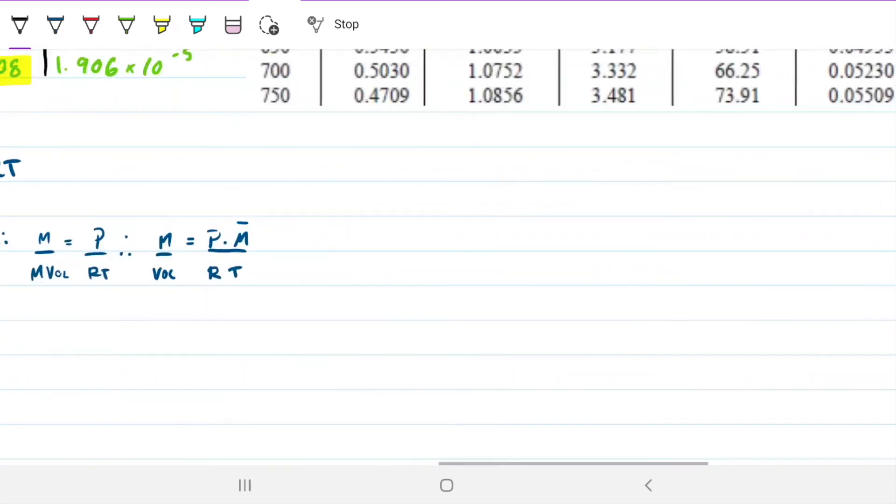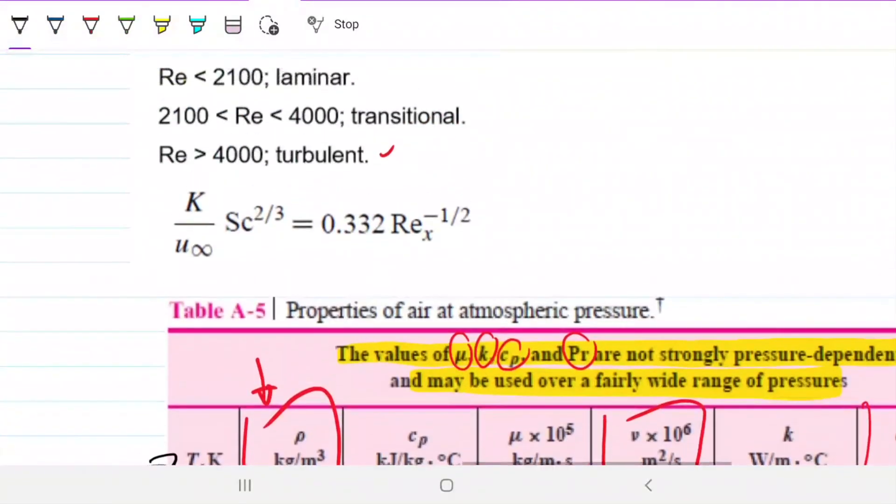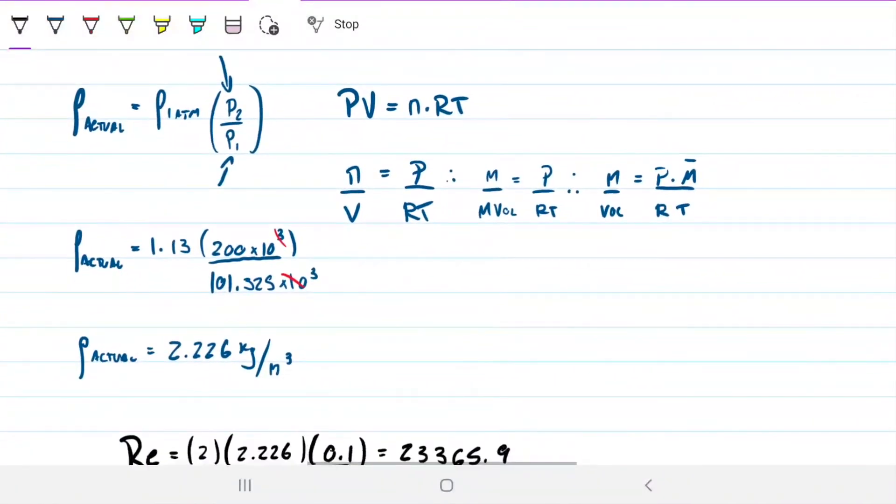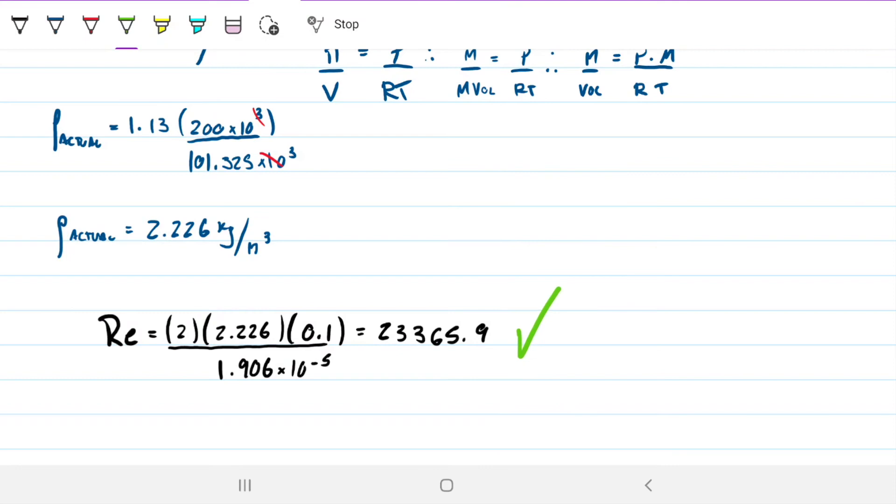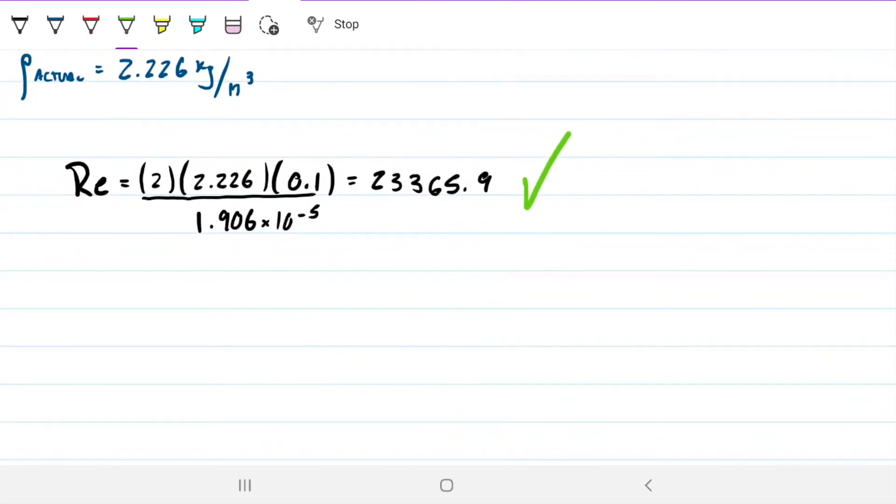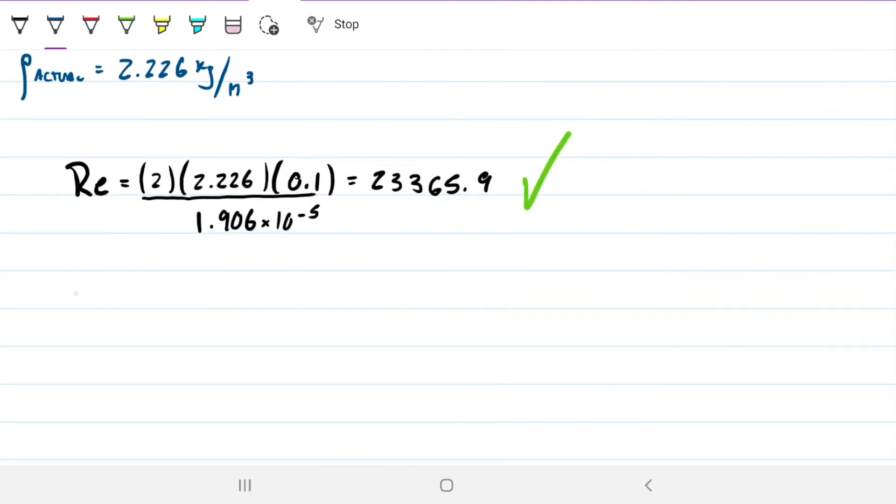If you recall, we actually had a reference for the Reynolds. So it had to be more than 4,000, and indeed it is. So that's turbulence. And so we can use our relationship, the only one that we're given. To be able to use the relationship, we also need to find Schmidt's number. Schmidt's number is related to the diffusion coefficient.